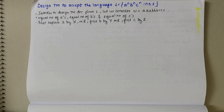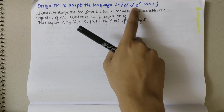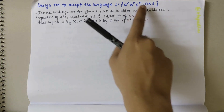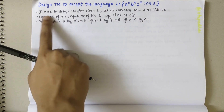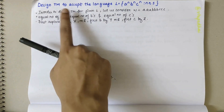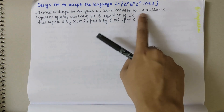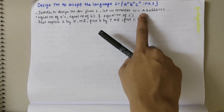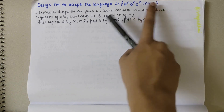In this video we'll be looking into designing a Turing machine to accept the language L = aⁿbⁿcⁿ, where n is greater than or equal to 1. In order to design the Turing machine for this language, let us consider a string comprising of 3 A's, 3 B's, and 3 C's, where n is equal to 3.